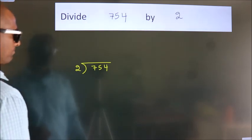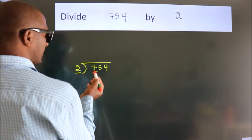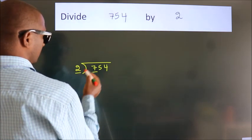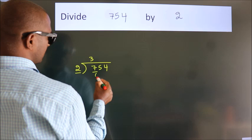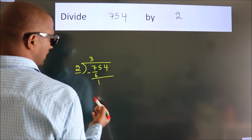Next, here we have 7, here 2. A number close to 7 in the 2 table is 2 times 3, which is 6. Now we should subtract. We get 1.